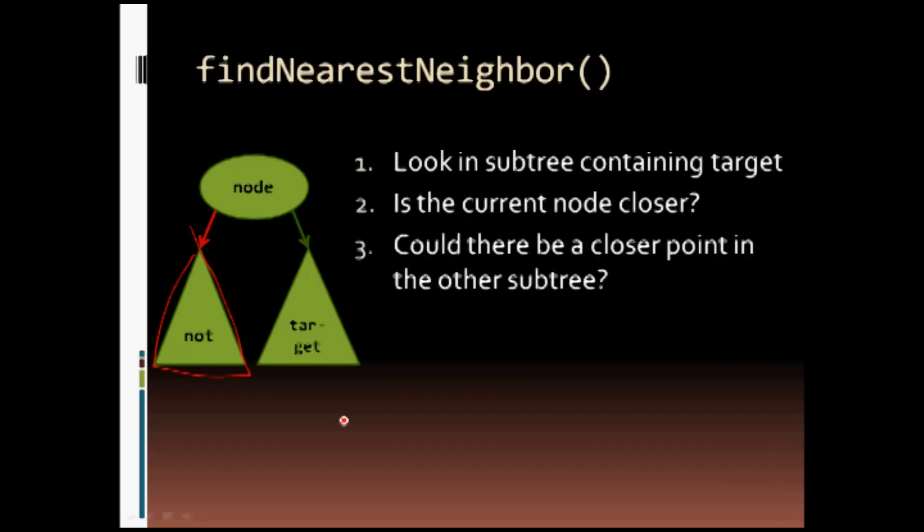then there is the possibility that a node in the other subtree that does not contain the target could actually be closer to the target than the one we already have.